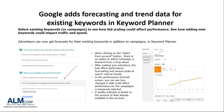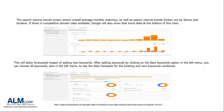In the Performance Forecast screen, you can see how changes in bids could affect performance for the campaigns or keywords selected. A quality indicator is based on the amount of data already available in the account. The image on the right shows the search volume trends and overall average monthly searches, as well as search volume trends broken out by device and location. If competitive domain data is available, Google will also show the trend data at the bottom. You can also see the forecasted impact of adding new keywords, which allows you to see the daily forecast for existing and new keywords combined.